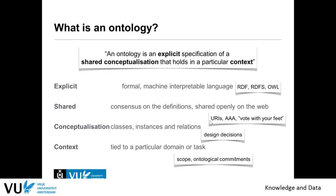In sharing, we do it by URIs. The AAA principle — which is authentication, authorization, and accounting — means that if people don't like an ontology, they can build their own and comment on it. A conceptualization means you have concepts, you order them and model them explicitly, giving a description of the concepts in a certain domain. We work with classes, instances, and relationships between instances.